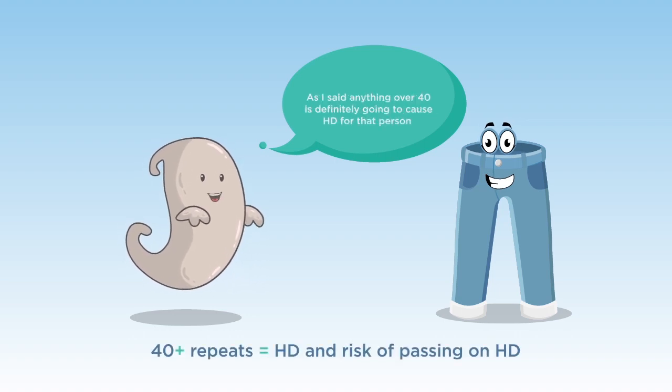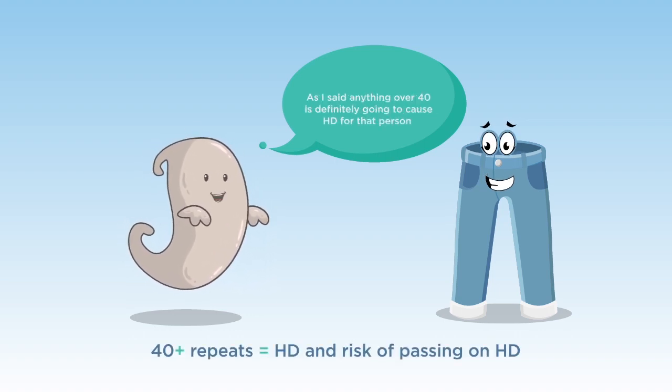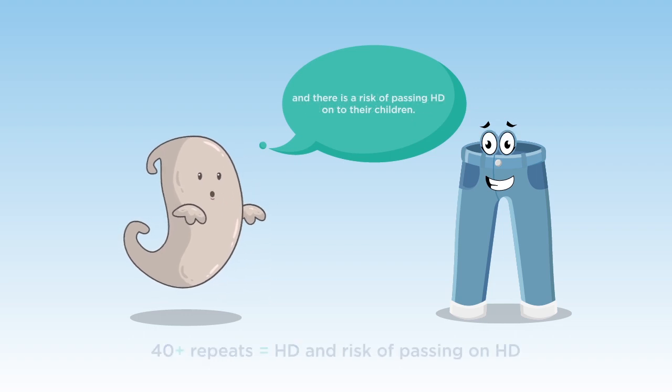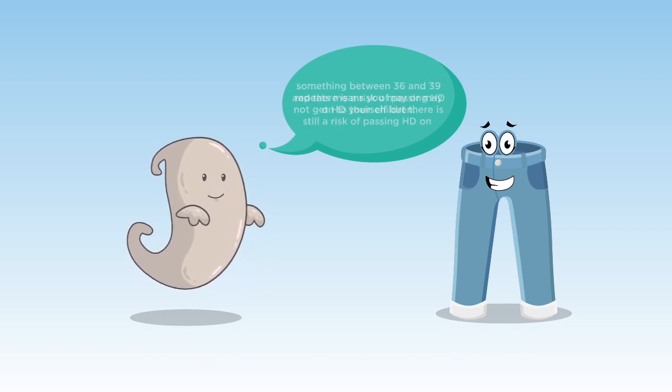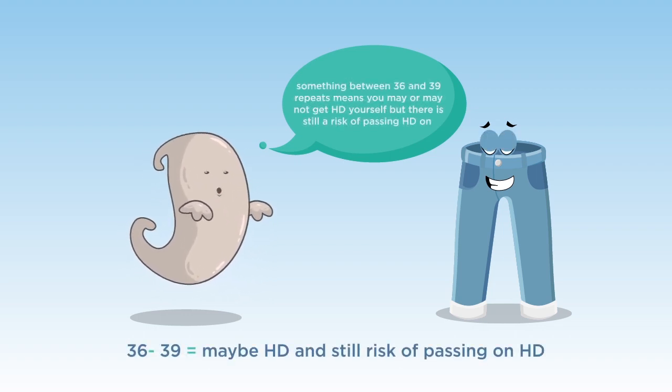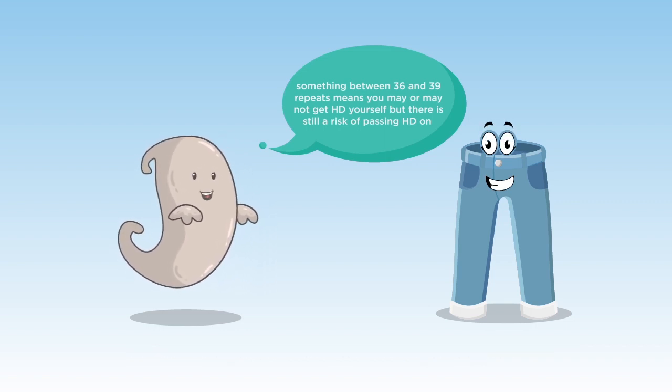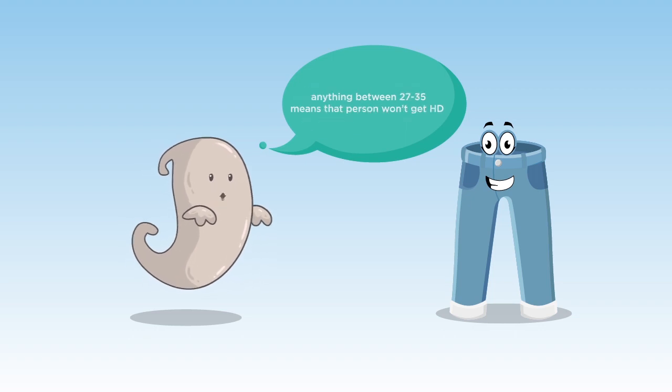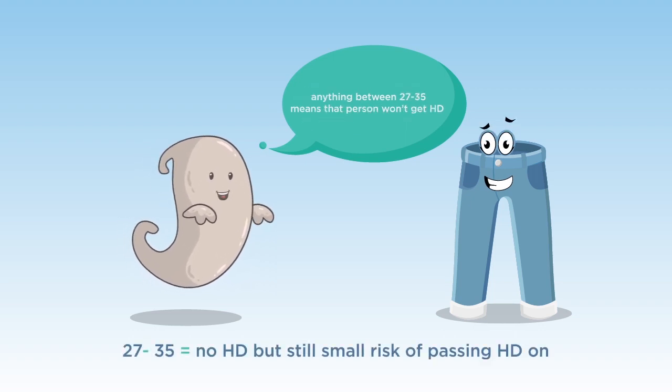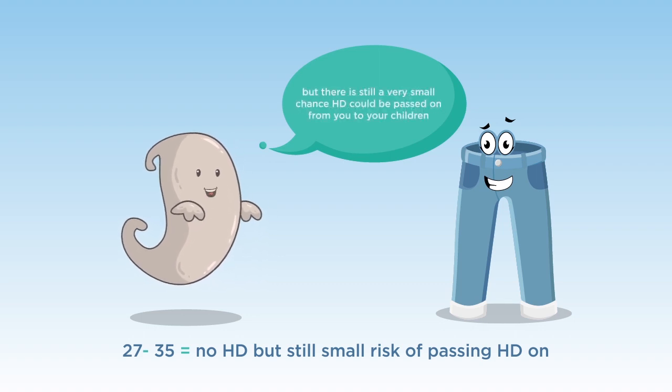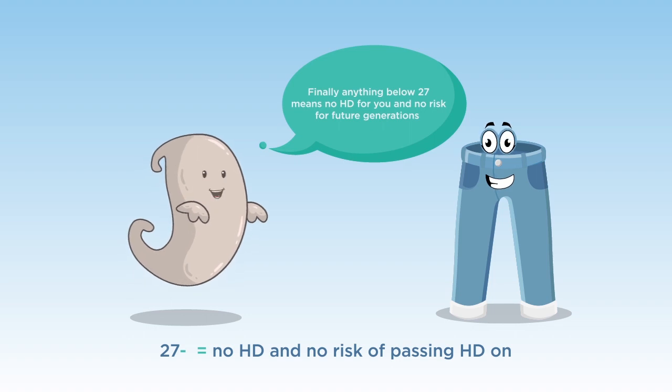As I said, everything over 40 is going to cause HD for that person, and there is a risk of passing HD on to their children. Something between 36 and 39 repeats means you may or may not get HD, but there is still a risk of passing HD on. Anything between 27 and 35 means that person won't get HD, but there is a very small chance HD could be passed on. Finally, anything below 27 means no HD for you and no risk for future generations.